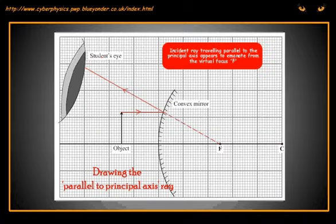Next, we have to draw the ray that travels parallel to the principal axis. That will reflect as if it came from the principal focus. I have cleared the other ray so that you can see the diagram more clearly.